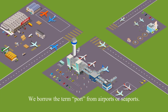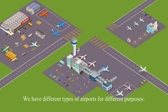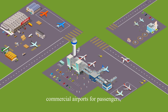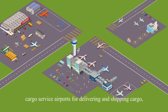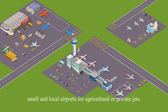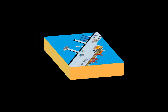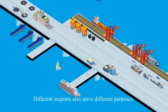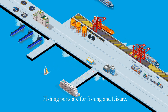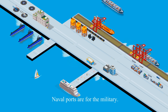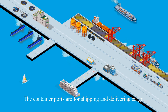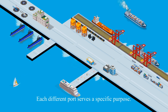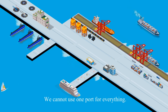We borrow the term port from airports or seaports. We have different types of airports for different purposes: commercial airports for passengers, cargo service airports for delivering or shipping cargo, and small or local airports for agriculture or private jets. Different seaports also serve different purposes: fishing ports are for fishing and leisure, naval ports are for the military, and container ports are for shipping and delivering cargo. Each different port serves a specific purpose.